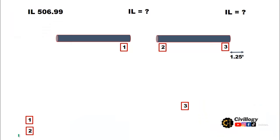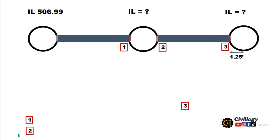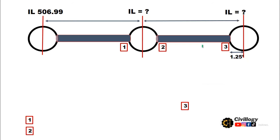Let's assume that we have two segments of pipes whose length is too long, so we will have to provide manholes between these two segments of the pipelines. Let's assume this is the starting point, or the first manhole. This is the second manhole and then there is a third manhole, and the center-to-center distance of these manholes is given as 70 feet. This is manhole number 1, this is manhole number 2, and this is manhole number 3.